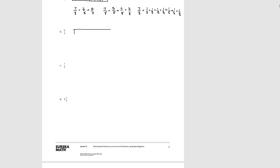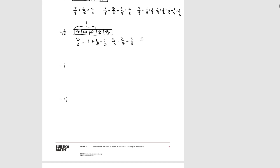For B, we know our tape diagram is going to be divided into 5 equal size pieces, but we're talking about thirds. So that means 3 thirds is 1, and we're talking about all 5 of the thirds. So 5 thirds could be equal to 1 plus 1 third plus 1 third, or 5 thirds could be equal to 2 thirds plus 3 thirds, or it could also be equal to 1 plus 2 thirds. The important thing is to remember that we're talking about thirds, so 3 thirds would be equal to 1.